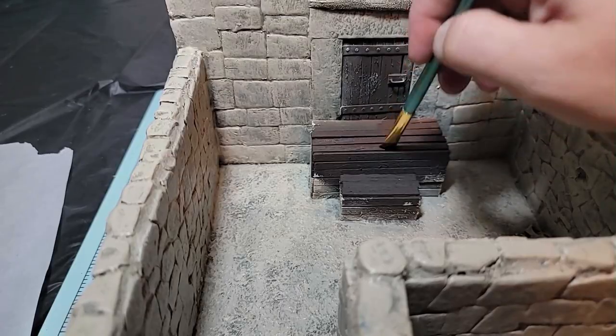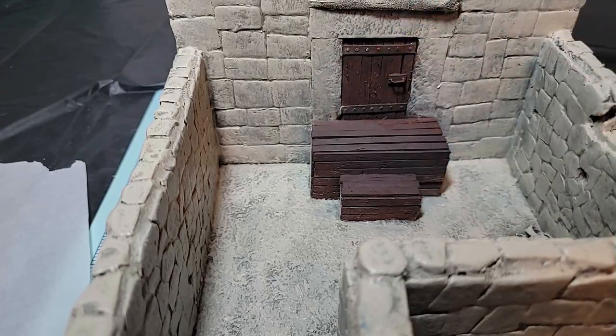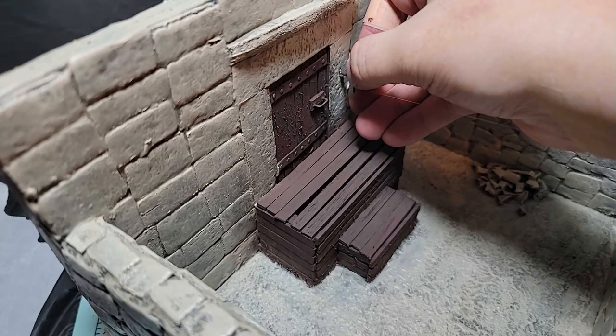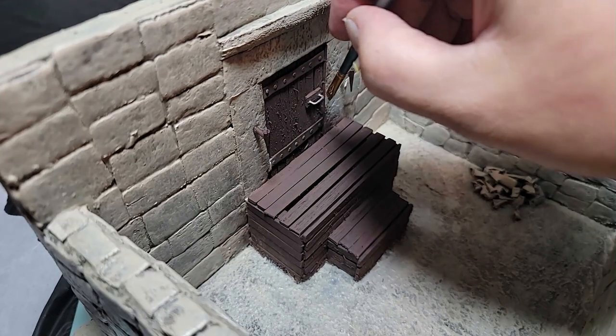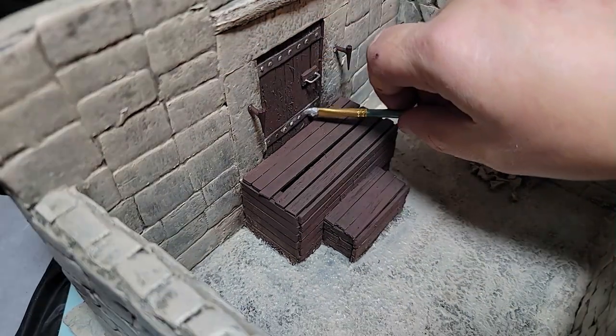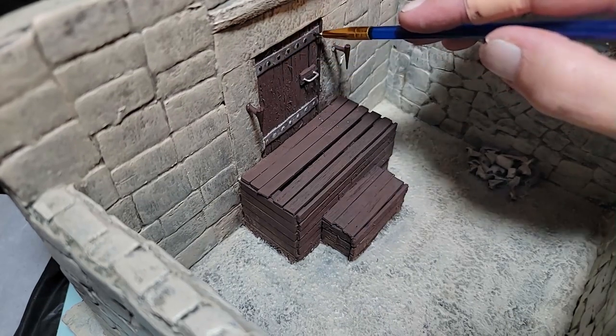To wrap up the painting process, I took some burnt umber and used it to paint the door, the stairs, and the torches for the wall before gluing them into place. Then I used silver to paint the handle of the door and the metal bands on the top and bottom of the door. And lastly, I used black to paint all of the rivets in the metal.